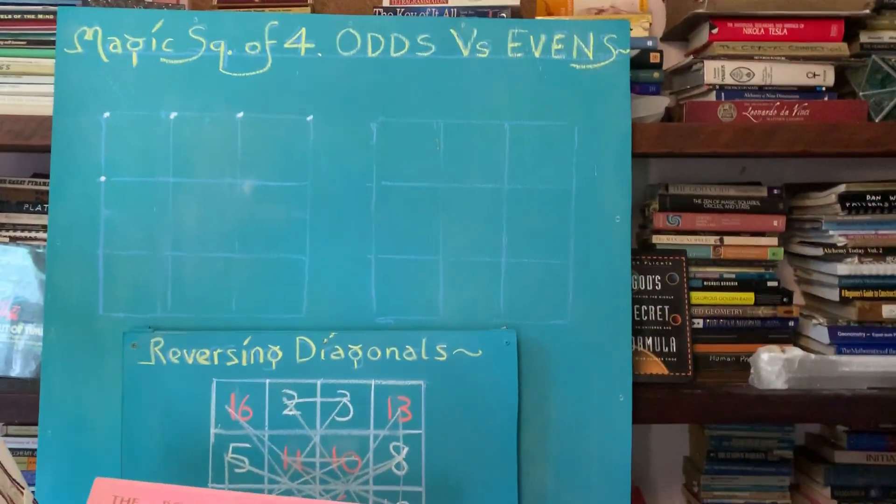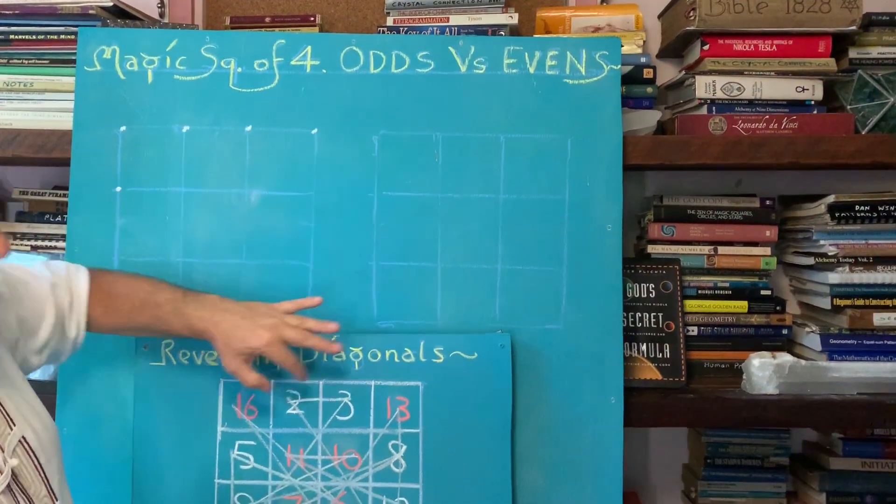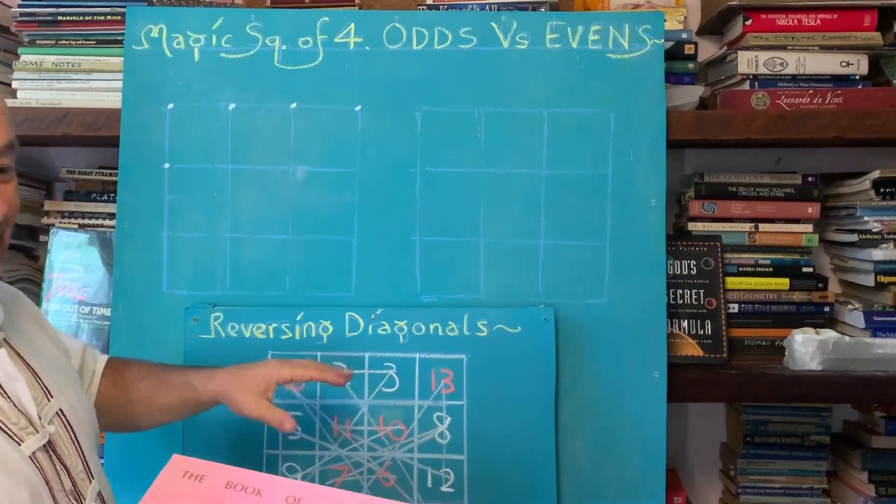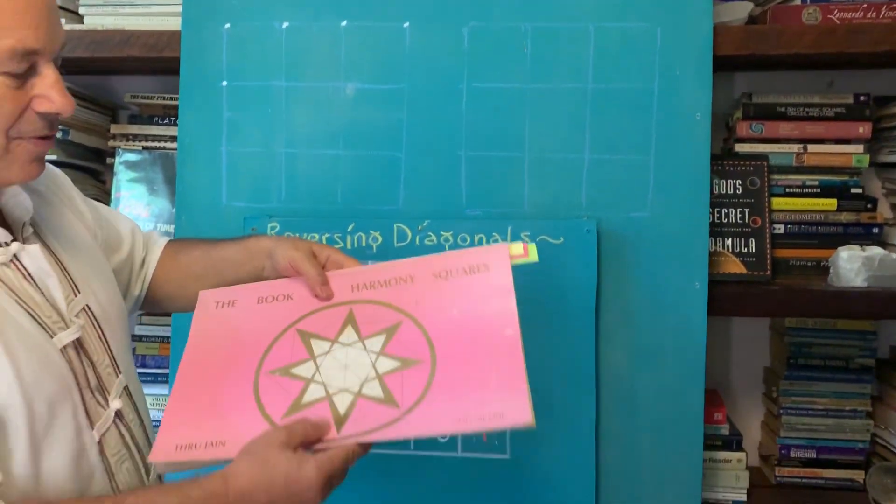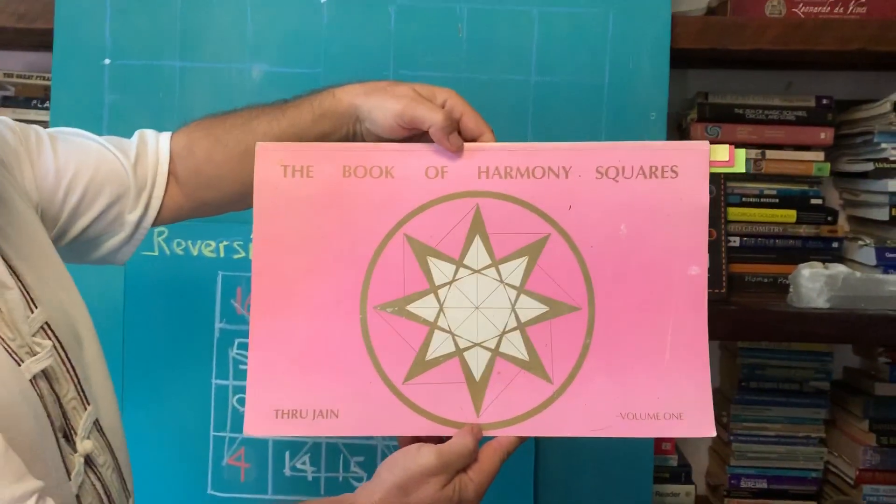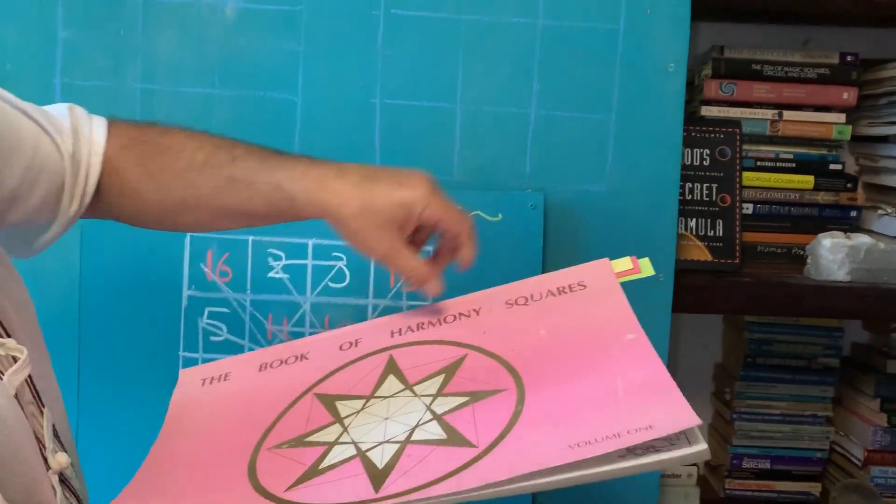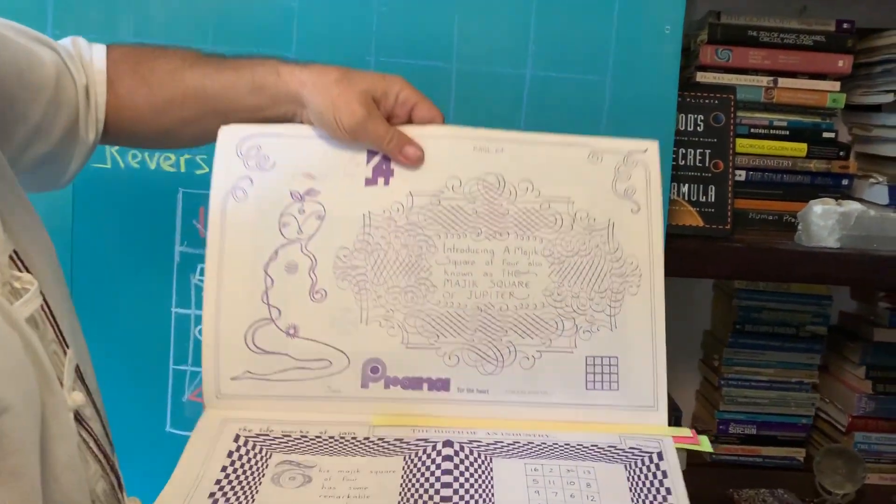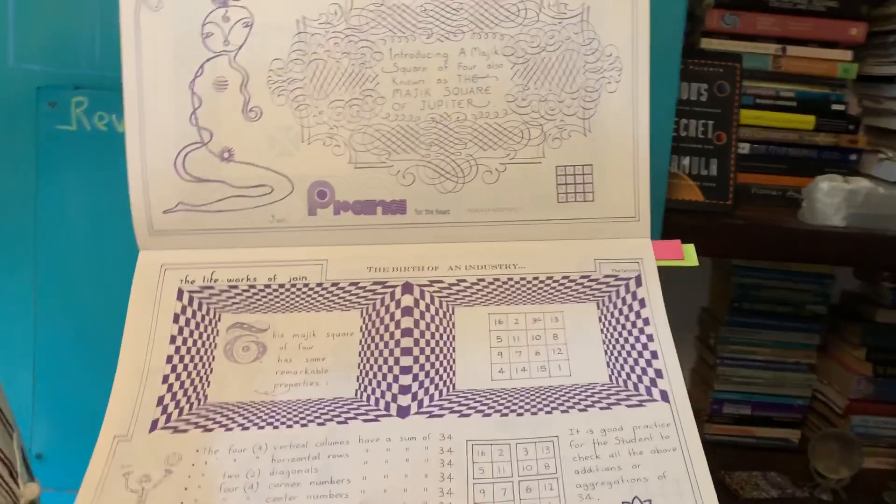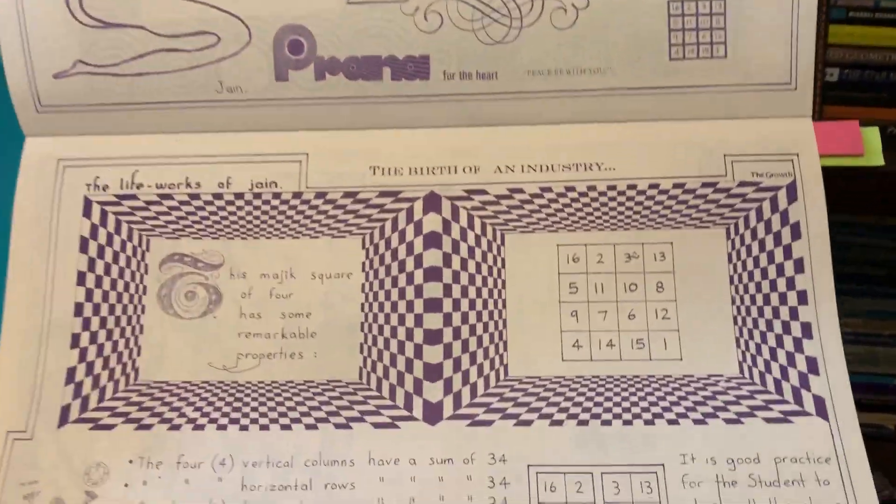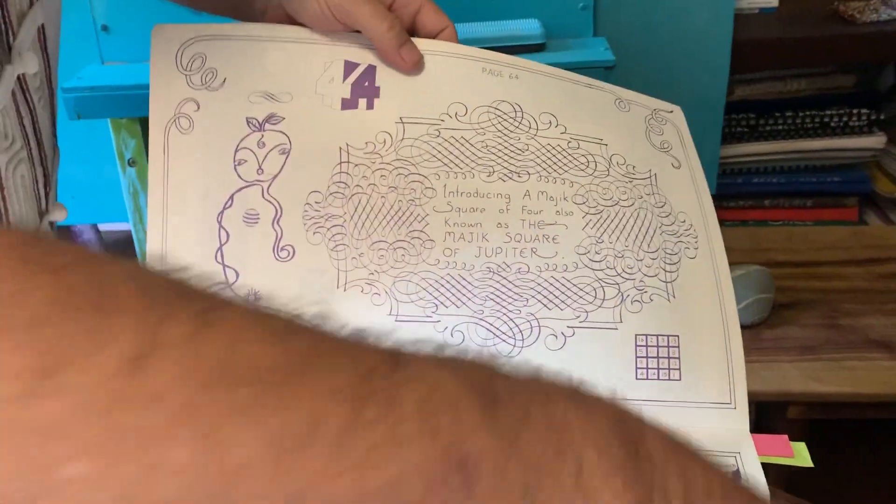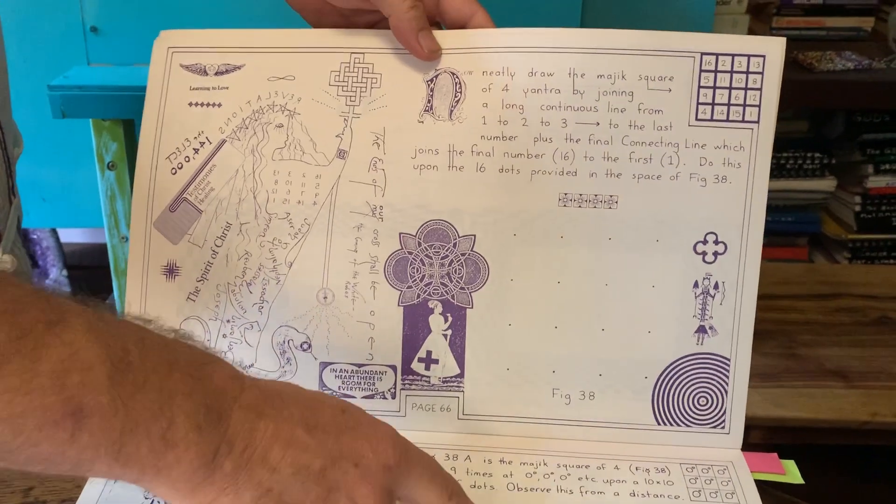In the second part of this video, we're going to put 16 dots that represent those 16 numbers. And I'm going to show you something special called the odds versus the evens inside those numbers. So just a little bit more to show you where this magic square came from. So I wrote this book called the Book of Harmony Squares in 1990. So this is 30 years ago. And what I'm showing you now is this is a handwritten book. It's called Introducing a Magic Square, a four by four, known as the magic square of Jupiter. So there's the numbers. They've been reversed. And then we can see here, I'll just flick through a few pages.